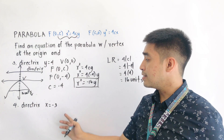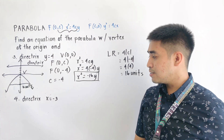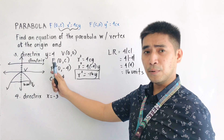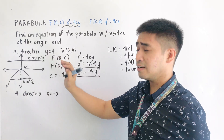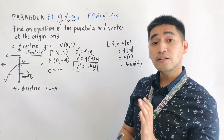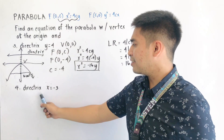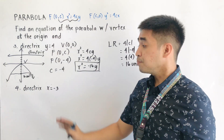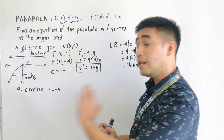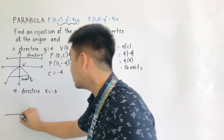So for our second example — our fourth example — the directrix is now located at x is equal to negative 3. From the first example, we could see that if the directrix is given as y, it either opens upward or downward. What if our directrix is x equals negative 3? Therefore, it opens to the left or to the right.